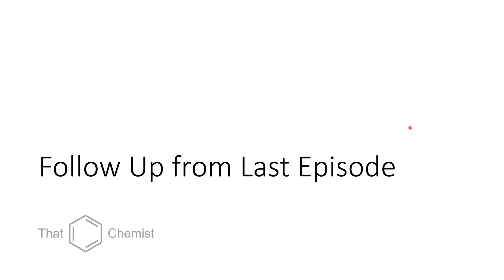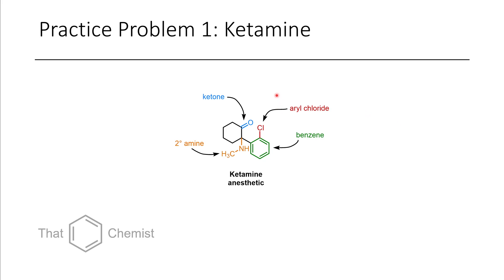Today we're going to briefly follow up on the practice problems from last lecture, starting with ketamine. Here in blue you can see this carbonyl — this is a ketone because there's a carbon on either side. This is a secondary amine because there's a connection to carbon on both sides but there's still one free NH. We also have a chlorine connected to this benzene ring, which we call an aryl chloride, as well as this benzene ring, which I've highlighted. After the examples, I'm not going to be highlighting that in the future unless it's particularly relevant.